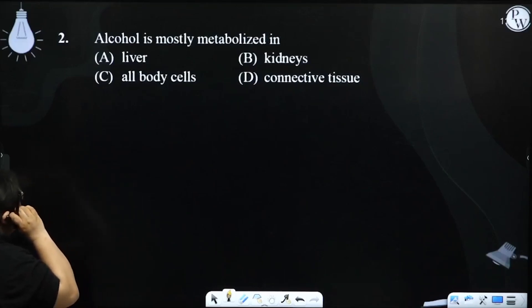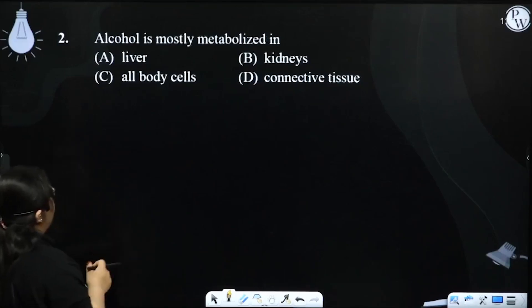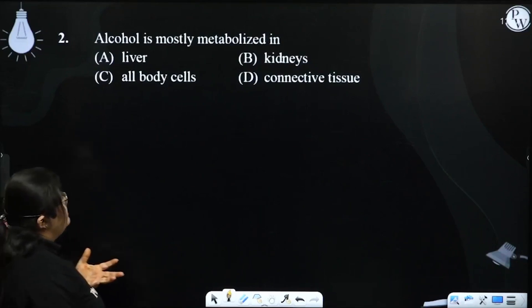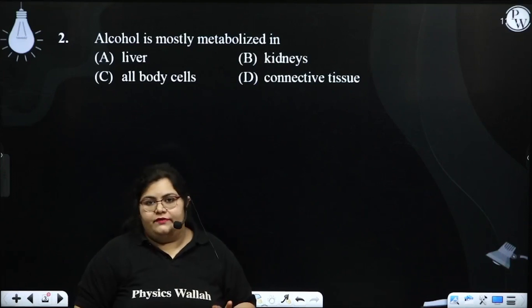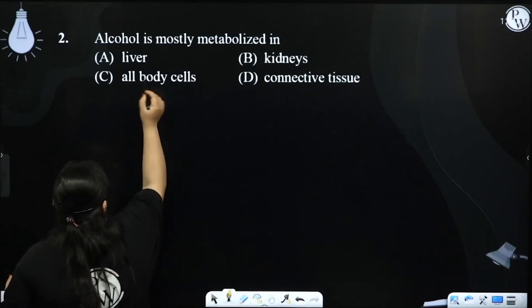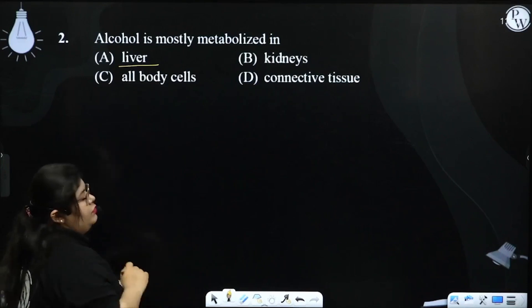Alcohol is mostly metabolized in: A) liver, B) kidneys, C) all body cells, or D) connective tissue. The question is really easy. We all know where alcohol metabolism happens.